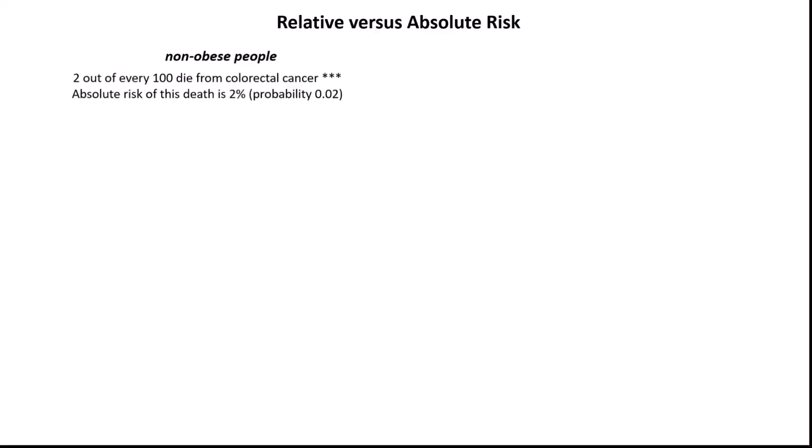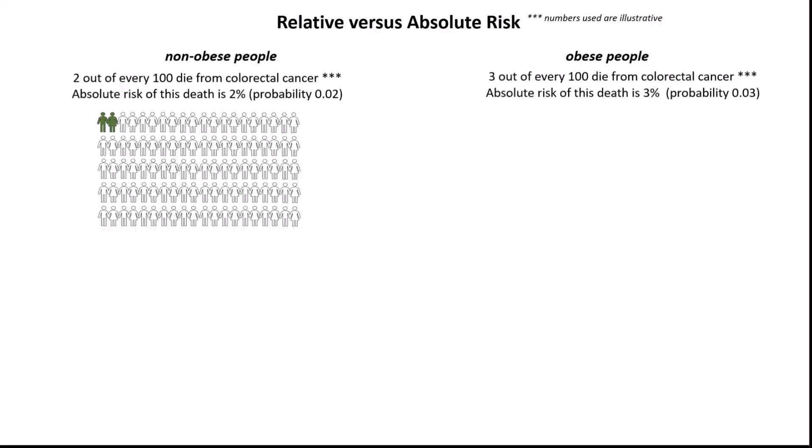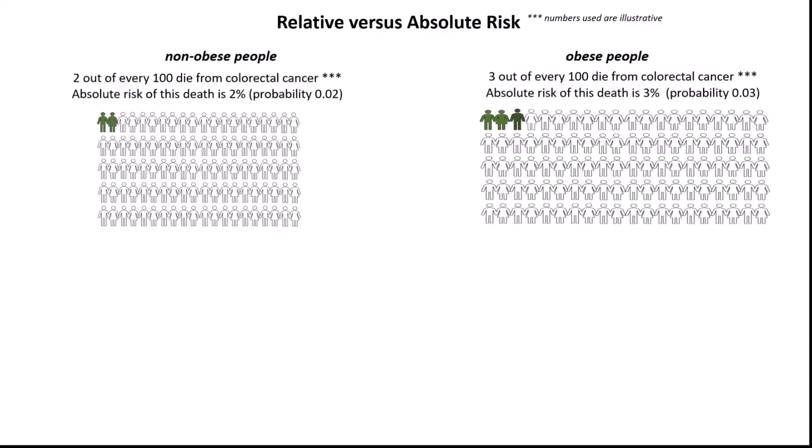First, we note that two out of every 100 non-obese people die from colon cancer, so the absolute risk of a non-obese person dying from colon cancer is 2%, a probability of 0.02. Now, among obese people, 3 out of 100 die of colon cancer, so the absolute risk is 3%.